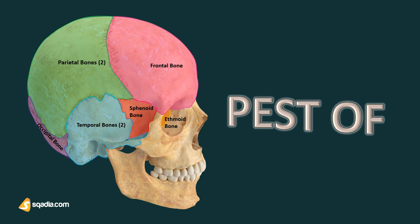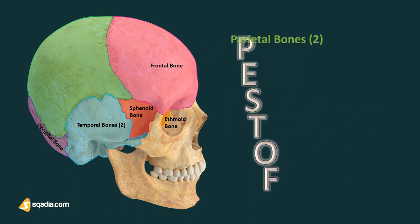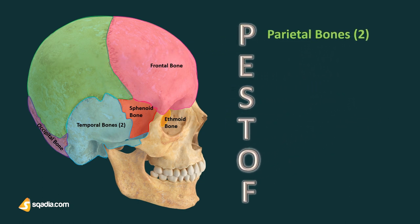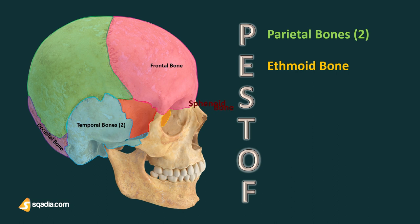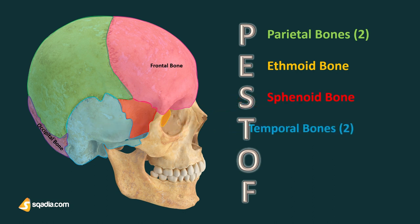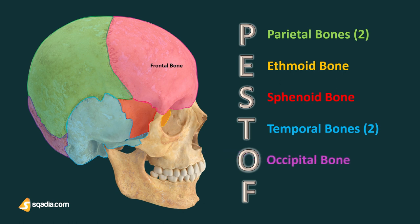P stands for parietal bones, E is for ethmoid bone, S is for sphenoid bone, T denotes the temporal bones, O is for occipital bone, and lastly F is for the frontal bone.